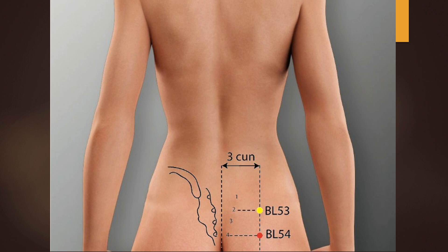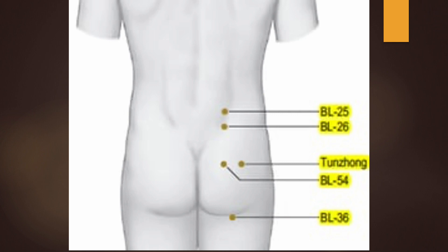Bladder 54 is used if the pain is in the buttocks. Location: in the region of the sacrum, 3 cun lateral to the middle sacral crest at the level of the 4th posterior sacral foramen. Functions: benefits urination, activates the meridian, strengthens the low back, alleviates pain. Needling: perpendicular insertion 1 to 2 cun. The Tunjung extra point, lateral to Bladder 54, is used for pain in the buttocks — translated as middle of the buttock. Located at the apex of an imaginary equilateral triangle whose base is a line drawn between the superior posterior side of the greater trochanter of the femur to the ischial tuberosity. Needling: straight insertion 2 to 3 cun.